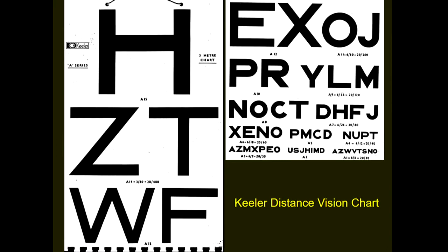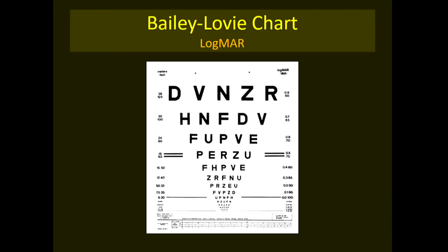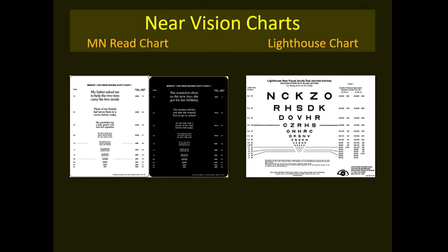The Keeler near vision chart also has a predictive value — if the patient reads a certain line, it indicates the magnification required. The Bailey-Lovie chart is a LogMAR chart specifically developed for low vision clients, later adapted by ETDRS. Near vision charts based on LogMAR acuity are also available. However, the regular Snellen chart can be used and tested at smaller distances like 10 feet, 5 feet, or even 3 feet.